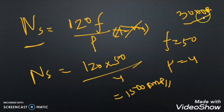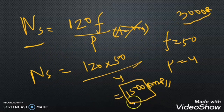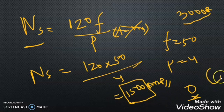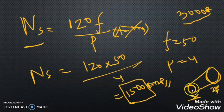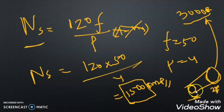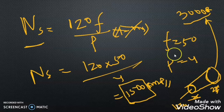We connect a pulley of size X to the motor shaft, and couple it with the fan shaft using a pulley of size 2X, connected through a drive belt. What we achieve is: the motor runs at 1500 RPM but the fan runs at 3000 RPM — without changing the motor. This shows how pulleys are very useful from an electrical point of view.